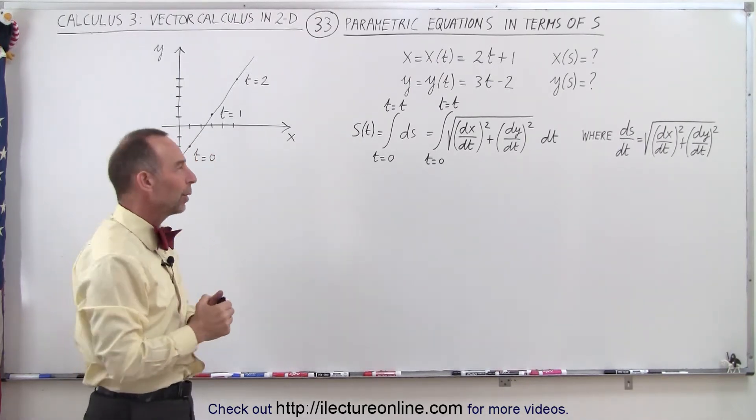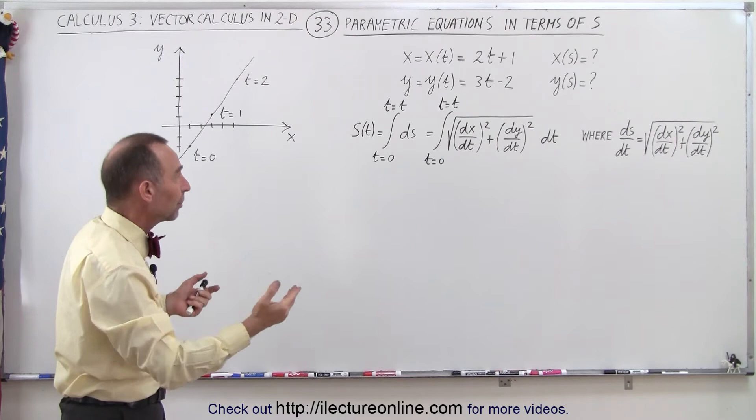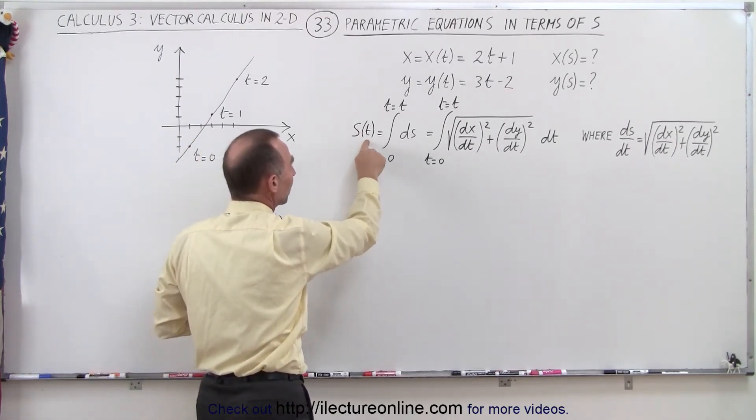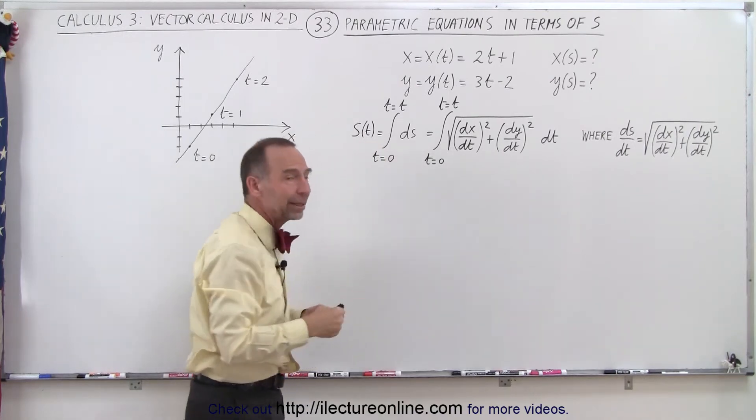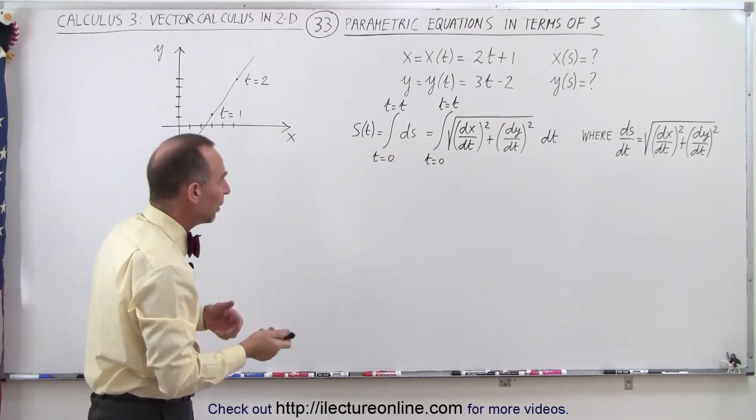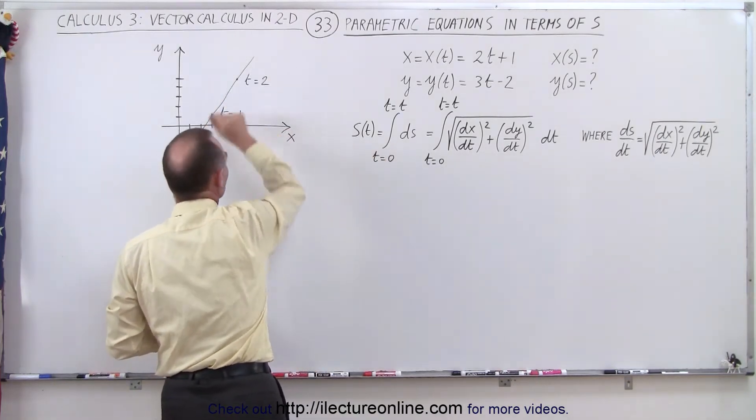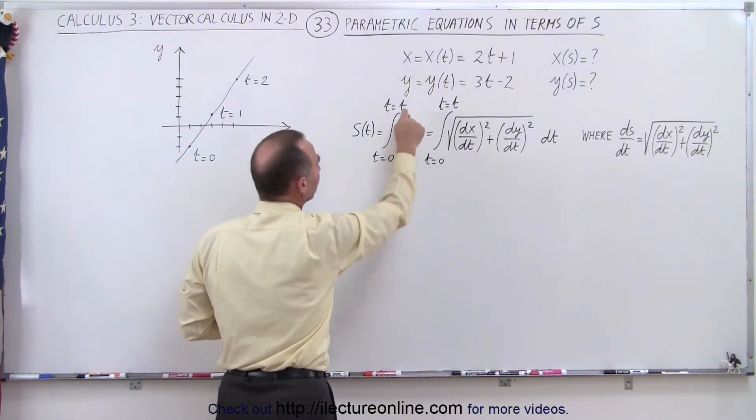How do we do that? Well, the way to do that is to find s as a function of t. I'm going to find a relationship between the parametric variable t and the arc length s along the curve. And we can do that by integrating over ds, small little segments on the curve, from t equals 0 to t equals t.